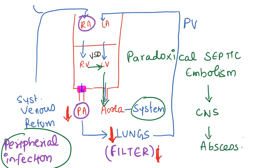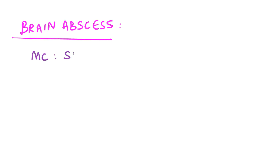That is why children with cyanotic congenital heart disease, especially with right-to-left shunt, are associated with brain abscess as an important complication. The most common organism associated with brain abscess is streptococci — especially the anaerobic group. The most important streptococcal group associated with brain abscess is the Streptococcus milleri group. Please make a note — this is commonly asked in exams.